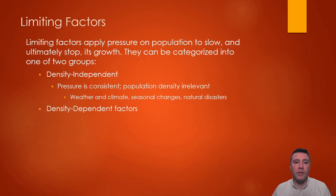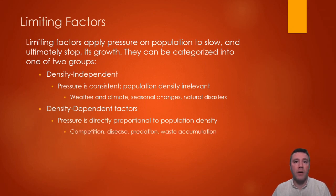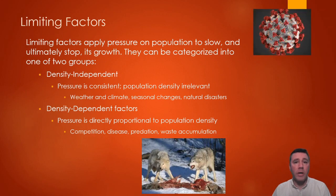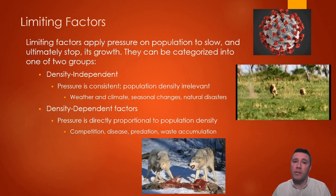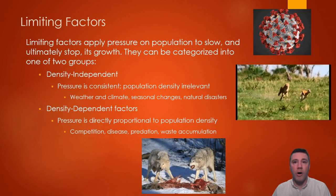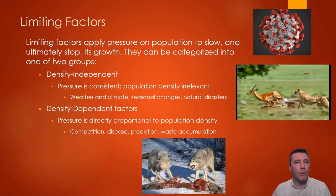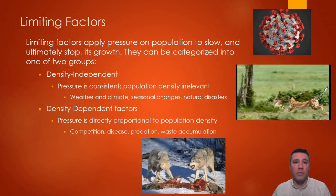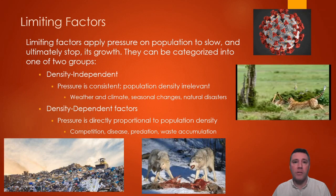The second category of limiting factors, density-dependent, apply pressure to slow population growth with increasing strength as population density increases. Competition for scarce resources becomes more fierce when more individuals are competing for them. Diseases spread more easily in a dense population than in a sparse one. An increasing prey population allows for an increasing predator population, which results in stronger regulation of the prey's population size. Of course, a decreasing prey population results in more competition among predators, and eventually their population falls as well. The production and accumulation of waste, some of which may be toxic, becomes more extensive and hazardous to health as the population producing it grows in size and density.